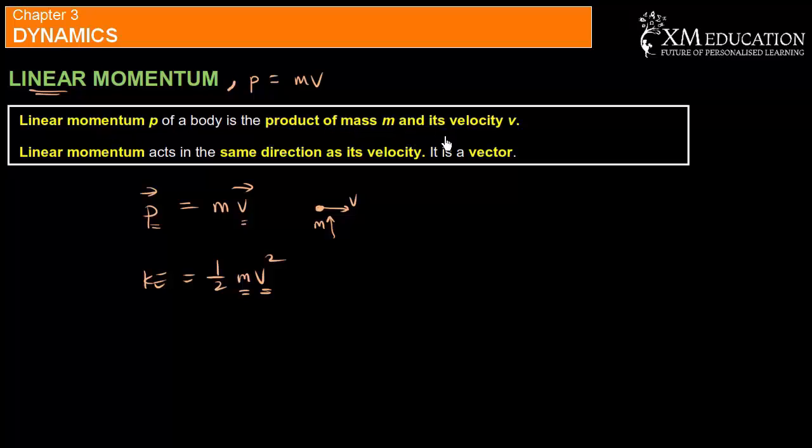Linear momentum is the product of mass and its velocity. You cannot just say velocity - its velocity - because this is for the mass's own velocity. If you miss out the word 'its,' you will lose marks. Linear momentum acts in the same direction as its velocity. These two must always be in the same direction.